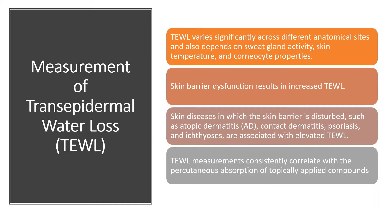Trans-epidermal water loss varies significantly across different anatomical sites because different parts of the body have different skin thickness, and water loss differs accordingly. It also depends on sweat gland activity — eccrine and apocrine glands — which are more active during puberty. TEWL also varies with skin temperature conditions and corneoside properties, meaning whether the skin is very dry or very moist, depending on its hydration level.